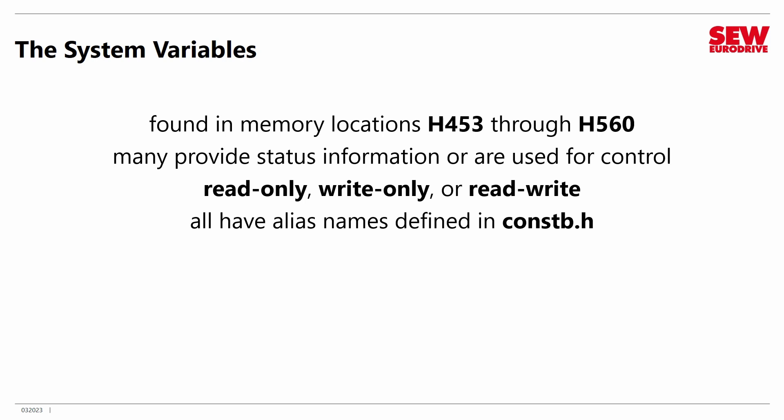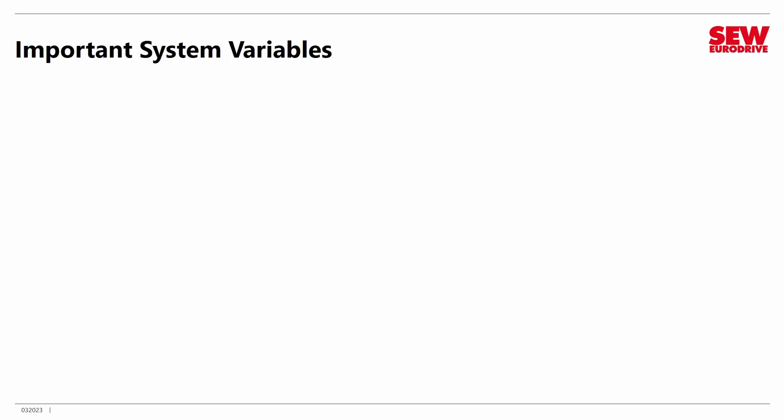These alias names are really nice because you don't have to remember the H numbers — you can refer to them by name, which I think is vastly superior. The names are included in the IPOS manual along with the H numbers, and you can find that information on pages 29 through 39 of the IPOS manual. So you should probably, when you finish this module, go and take a look at those pages, just skim them over and get an idea what the system variables are. Let's talk about a few of the most important ones.